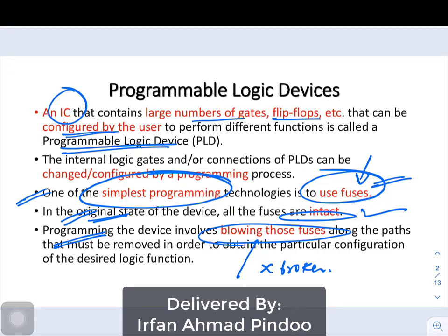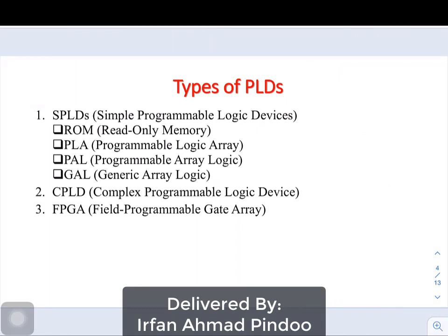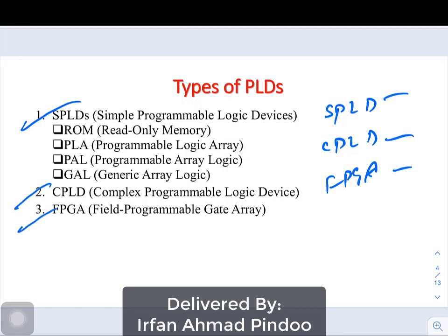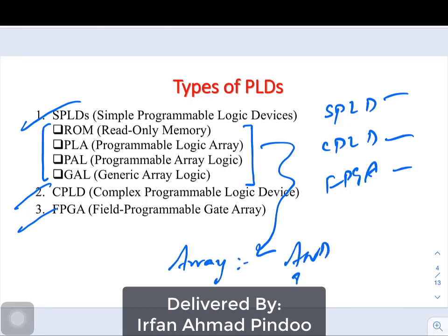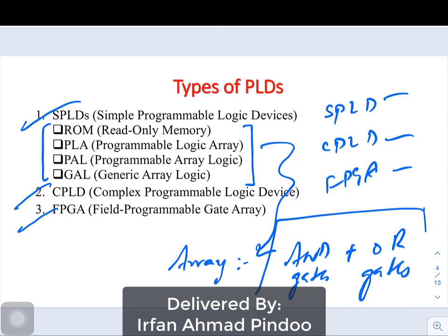The different types of programmable logic devices are SPLD, CPLD, and FPGA — these are the three broad categories of PLDs. SPLD is divided into four different parts: ROM, PLA, PAL, and GAL. They are nothing but an array of AND gates plus OR gates, and we can connect them in a certain fashion to create various logical expressions.